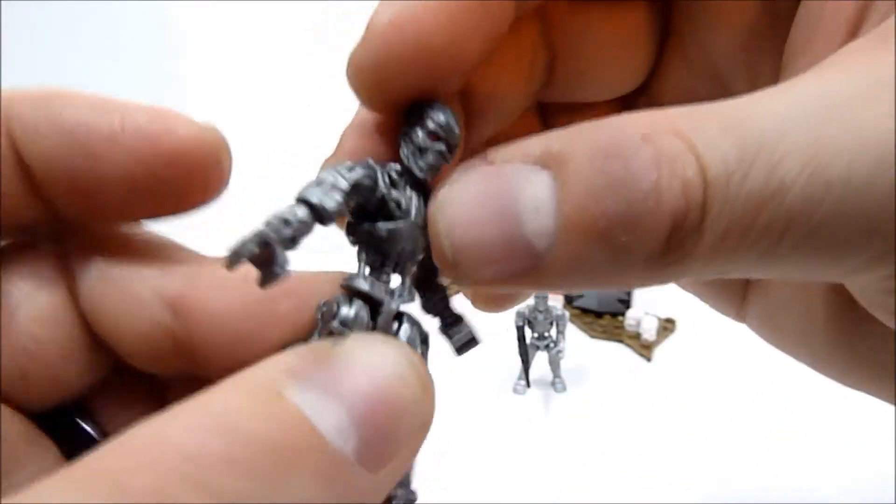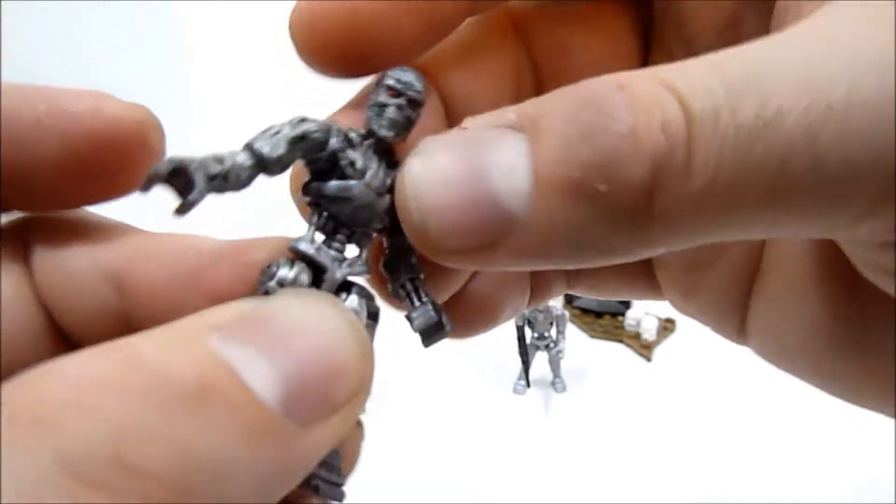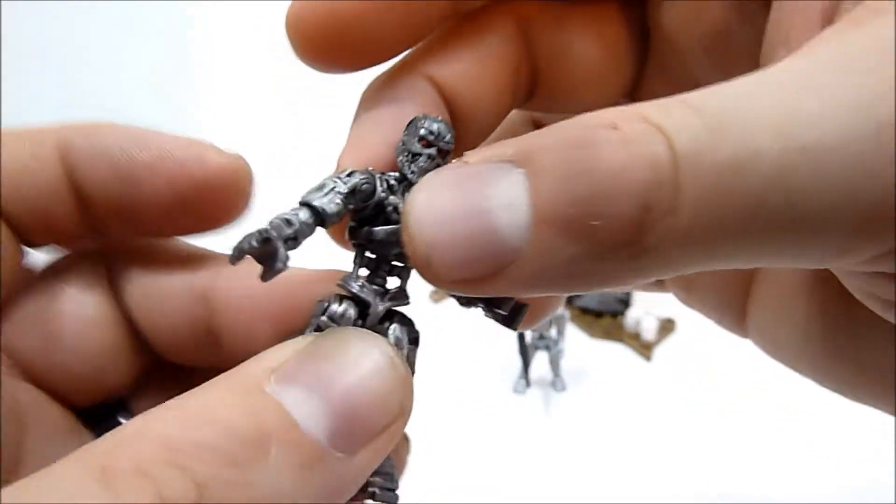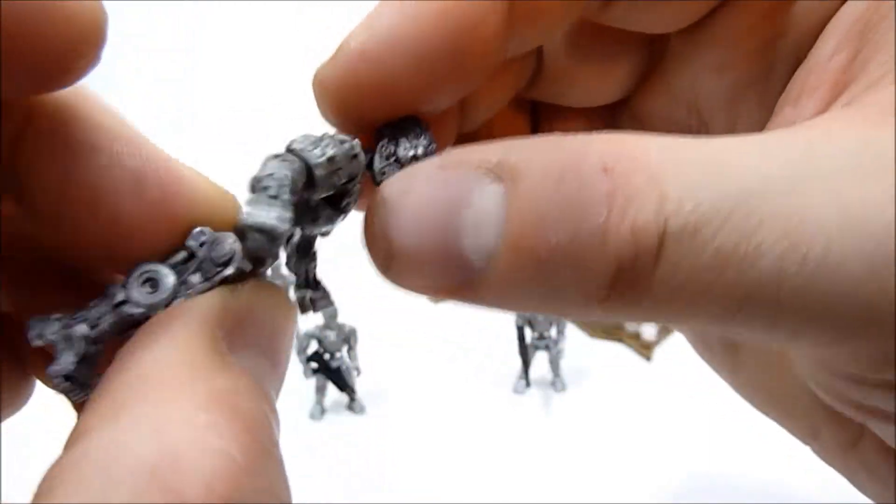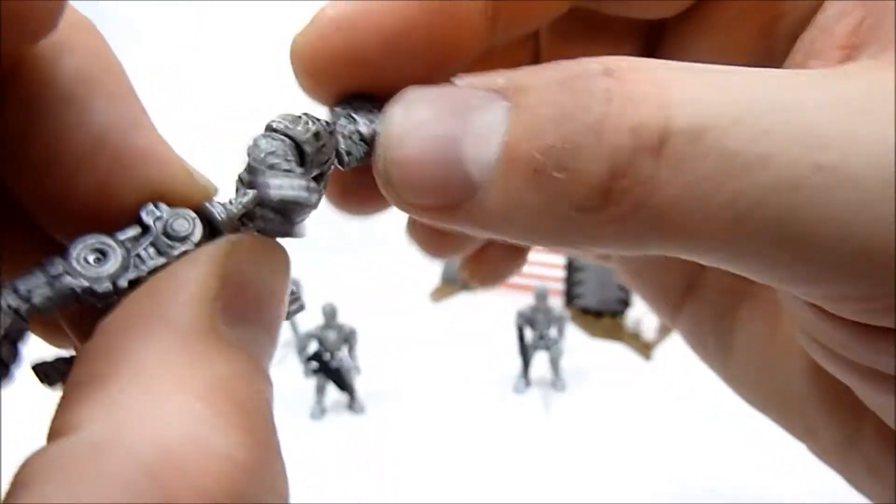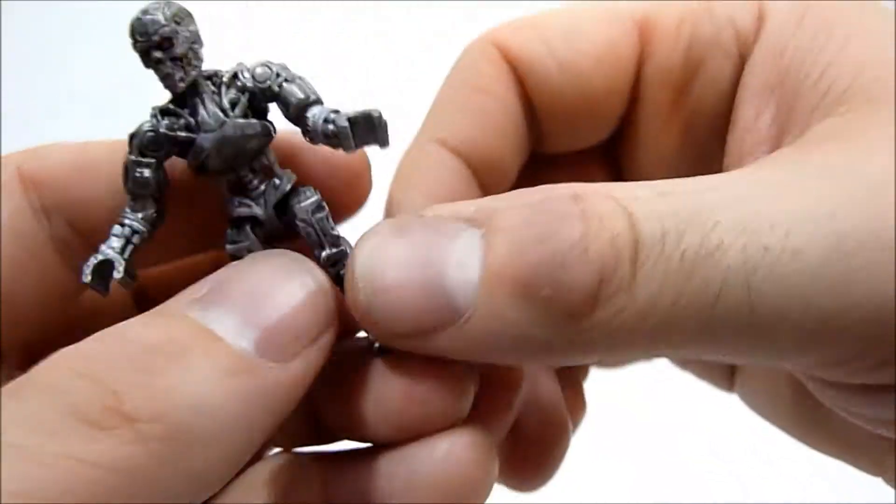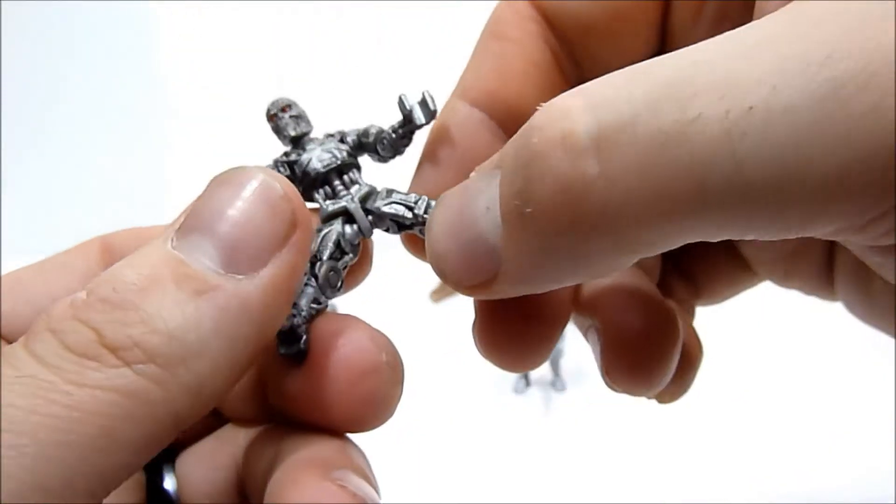So you can get some really cool poses out of that, very nice ab crunching like that. And of course they do have the ball jointed hips.